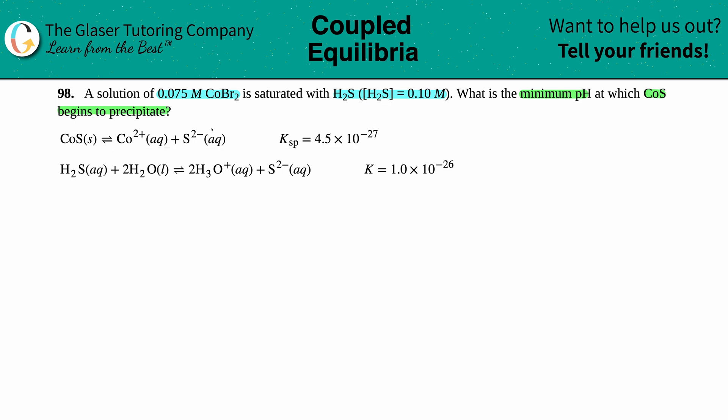It seems like I have to use the first equation first. So if we take this information, we have CoS solid, which comes to equilibrium with Co2+ aqueous and S2- aqueous with a Ksp of 4.5 times 10 to the negative 27. Let's write out the Ksp expression. It's just the concentration of the two products, so the concentration of Co2+ times S2-.